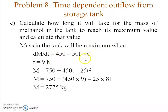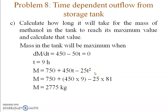Setting dm/dt = 450 − 50t = 0 gives t = 9 hours. So at 9 hours, the mass of methanol in the tank reaches its maximum. Plugging t = 9 into the expression for m gives a maximum mass of 2775 kg.